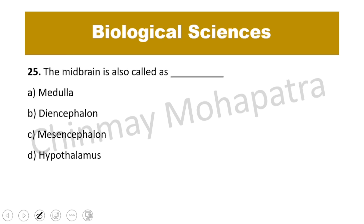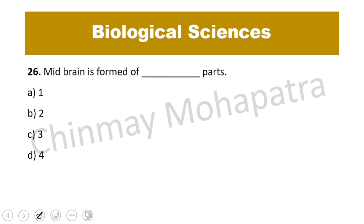Question number 25: The midbrain is also called — the right answer is mesencephalon. Question number 26: The midbrain is formed of how many parts? The right answer is two parts.